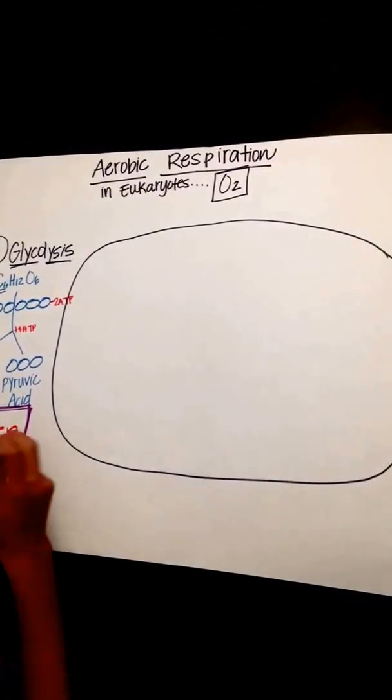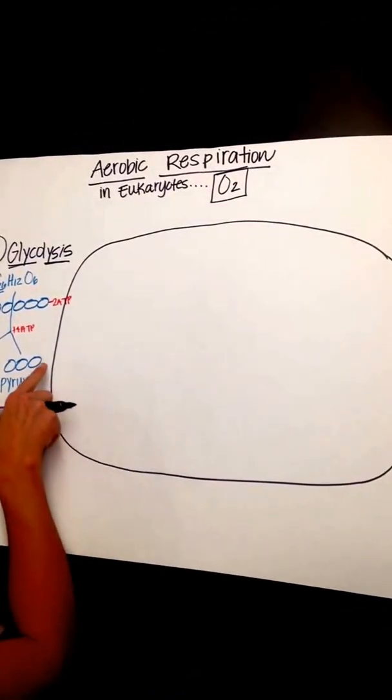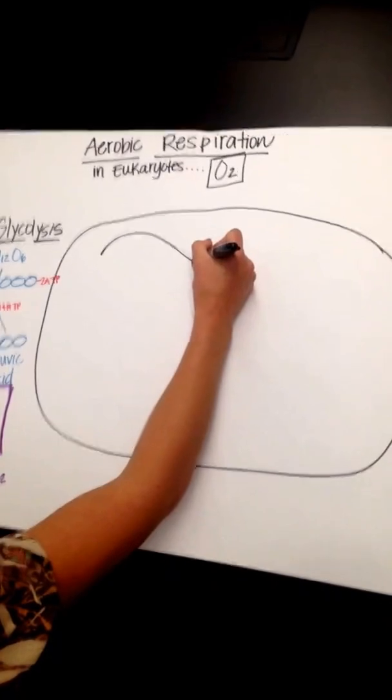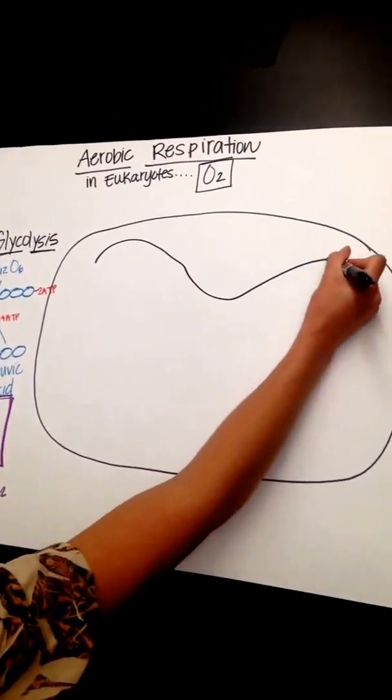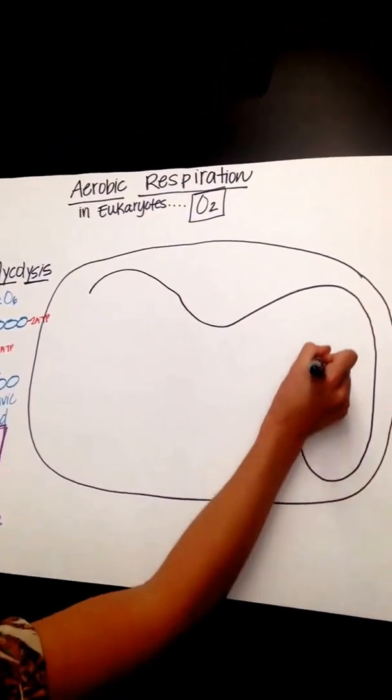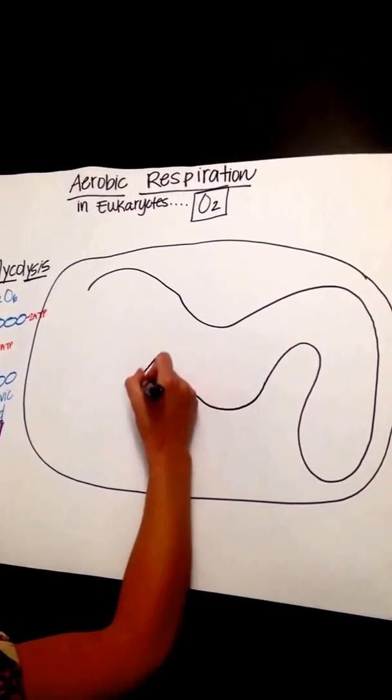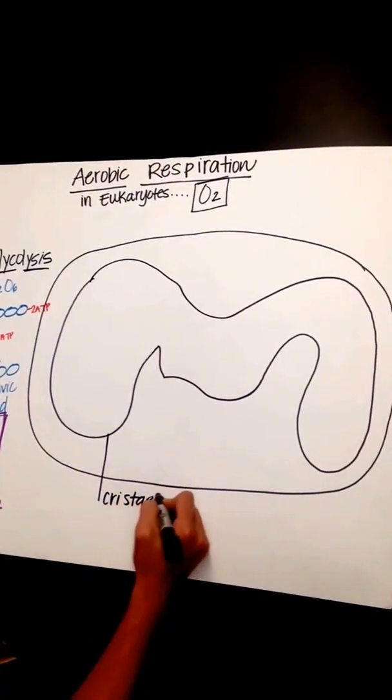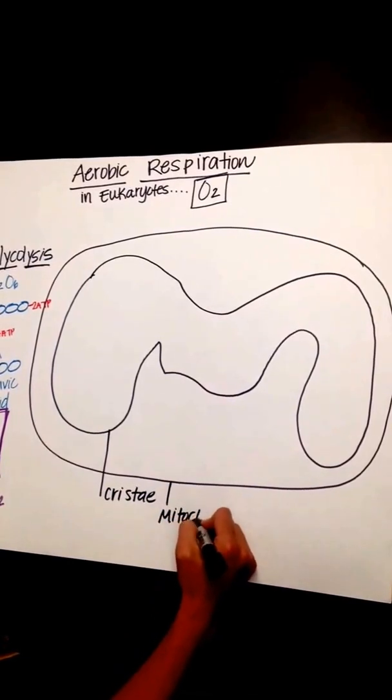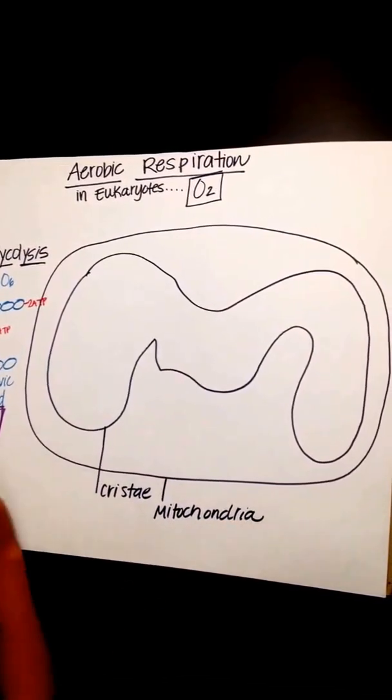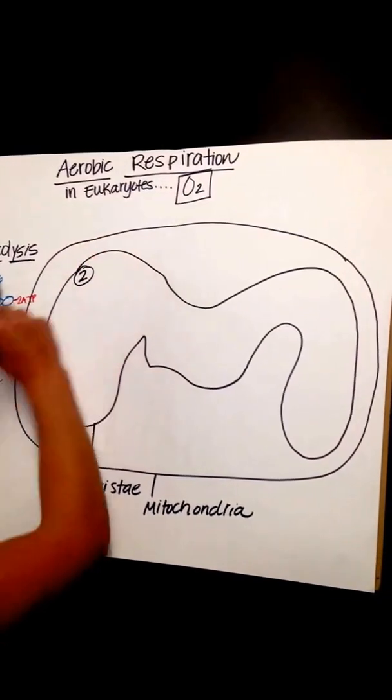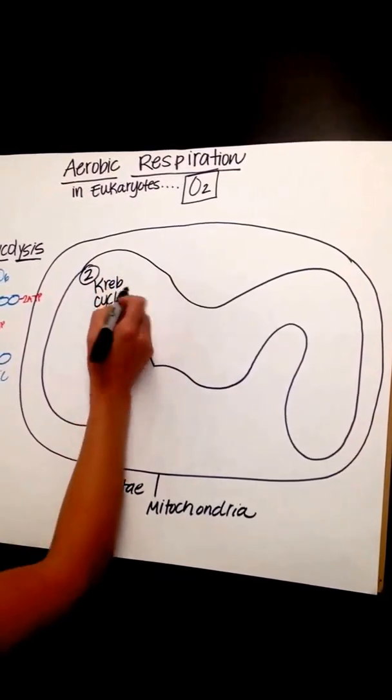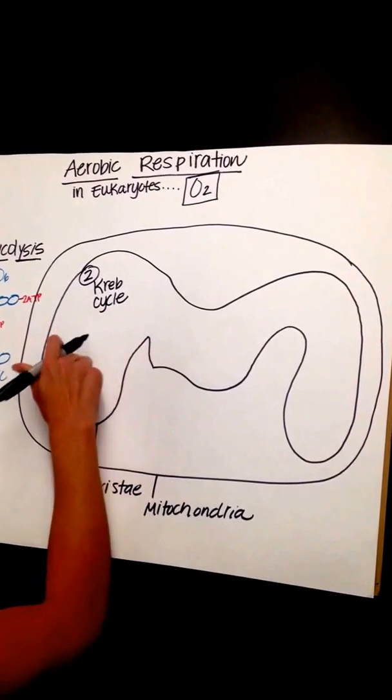The next step is the Krebs cycle. And it happens inside the mitochondria. Well, the mitochondria is an organelle that has a cristae inside it. And cristae is inner folds. It increases the surface area of the mitochondria. So this is the cristae of the mitochondria. The second step we call the Krebs cycle, and I'm drawing it inside the cristae because that's where it occurs. Krebs cycle, also citric acid cycle, is what it can be called, is inside the cristae.